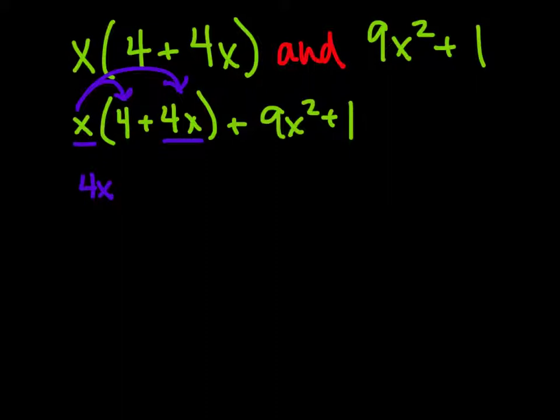And x times 4x is technically x times 4 times x. So we have 9x² + 1 added to the end.